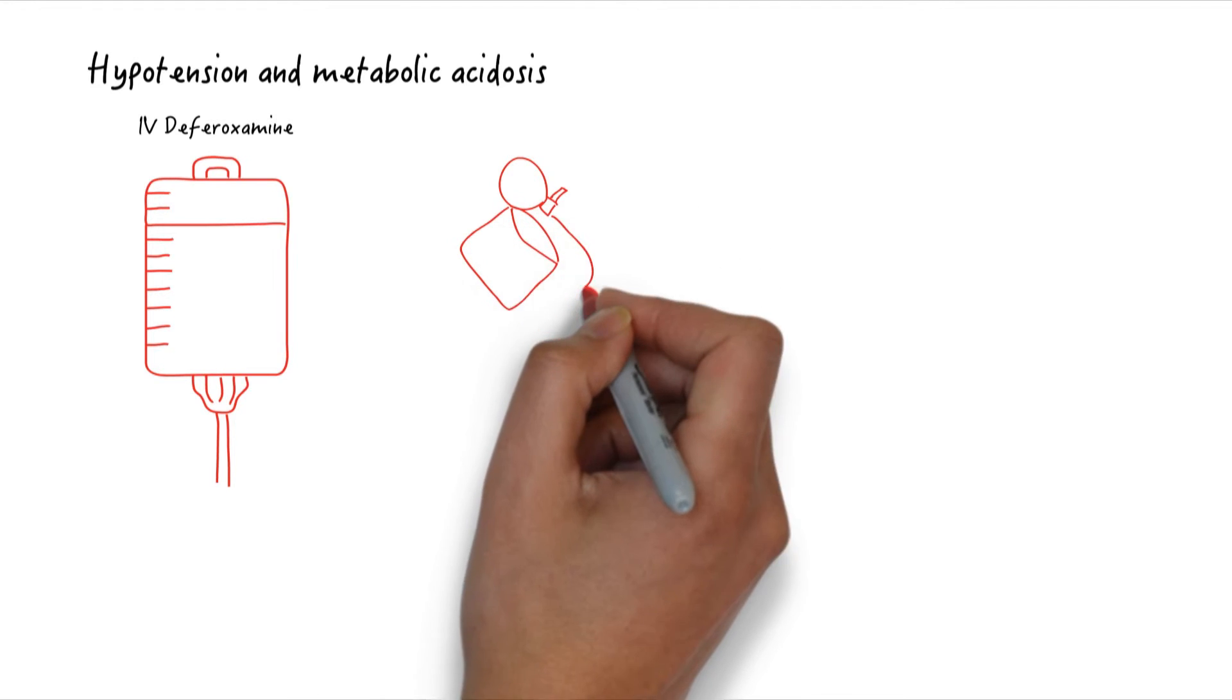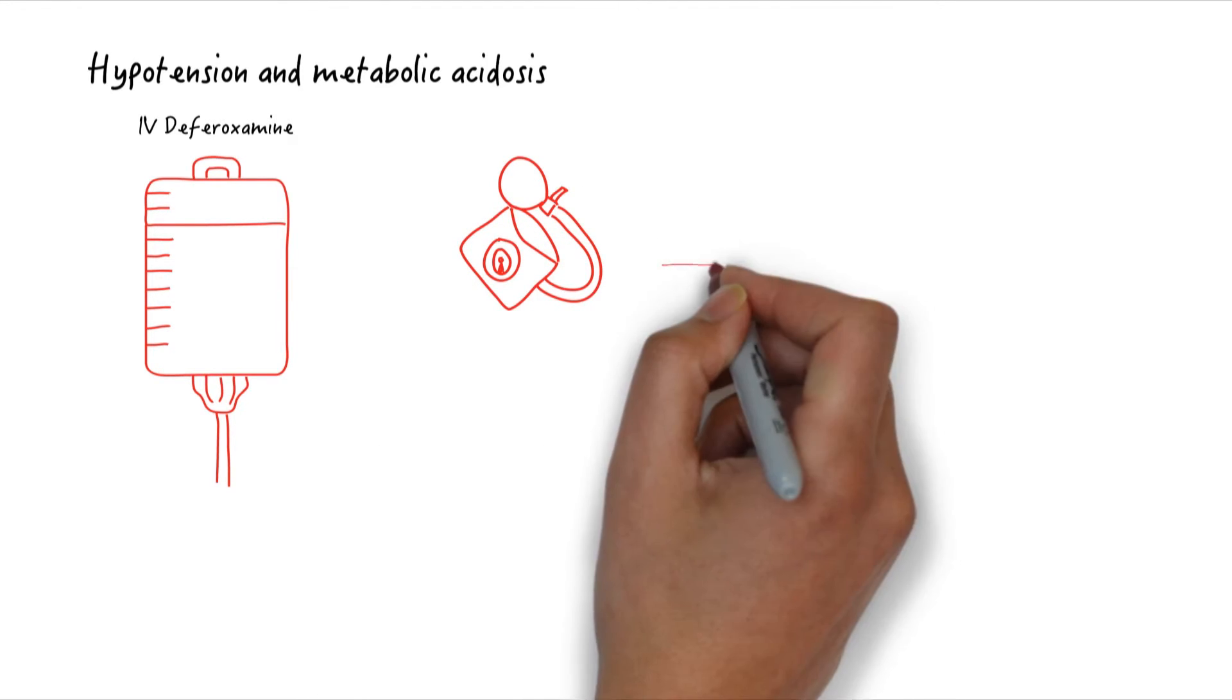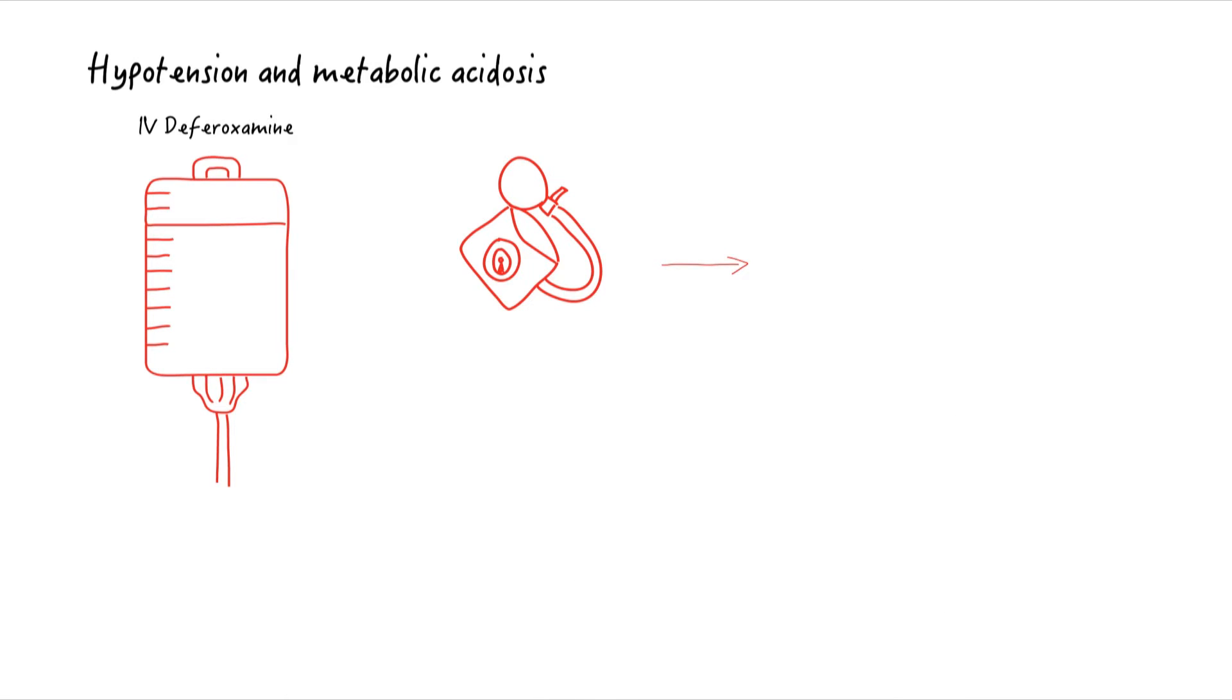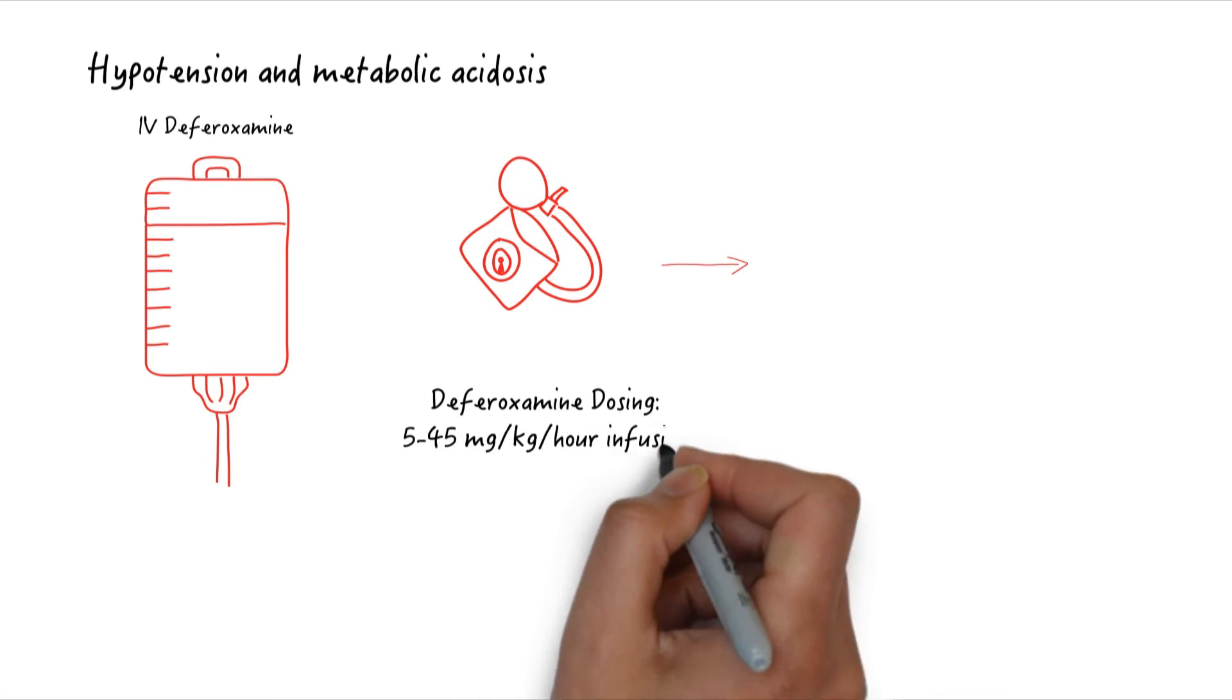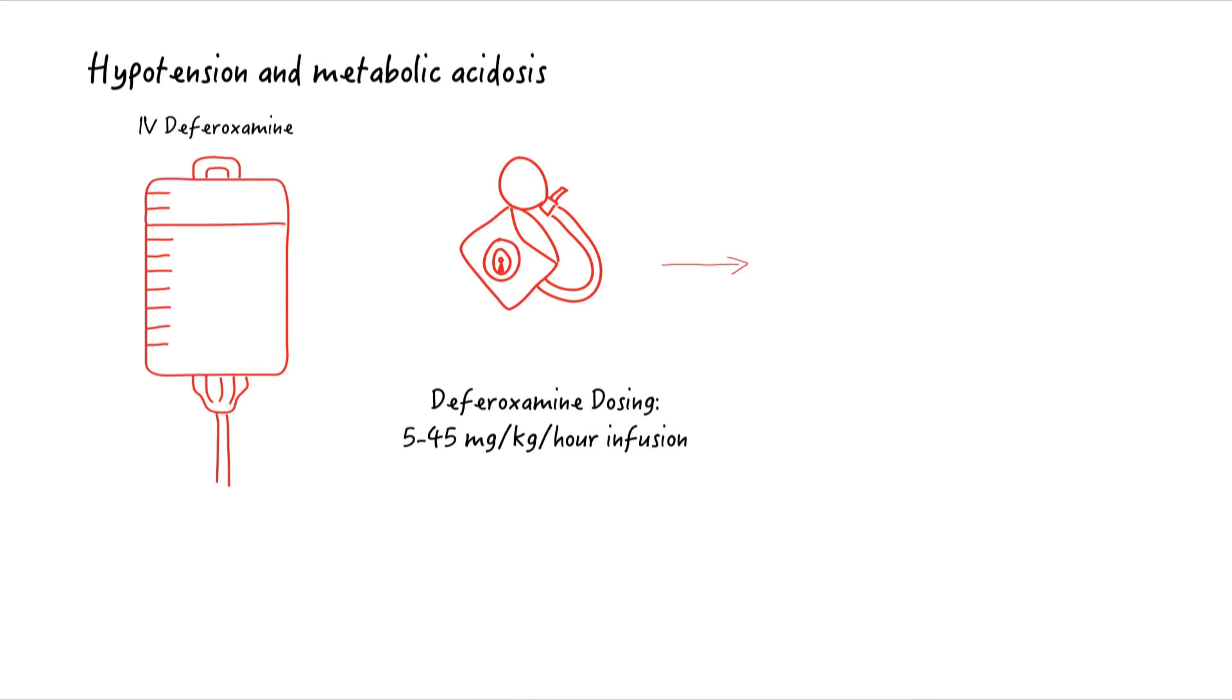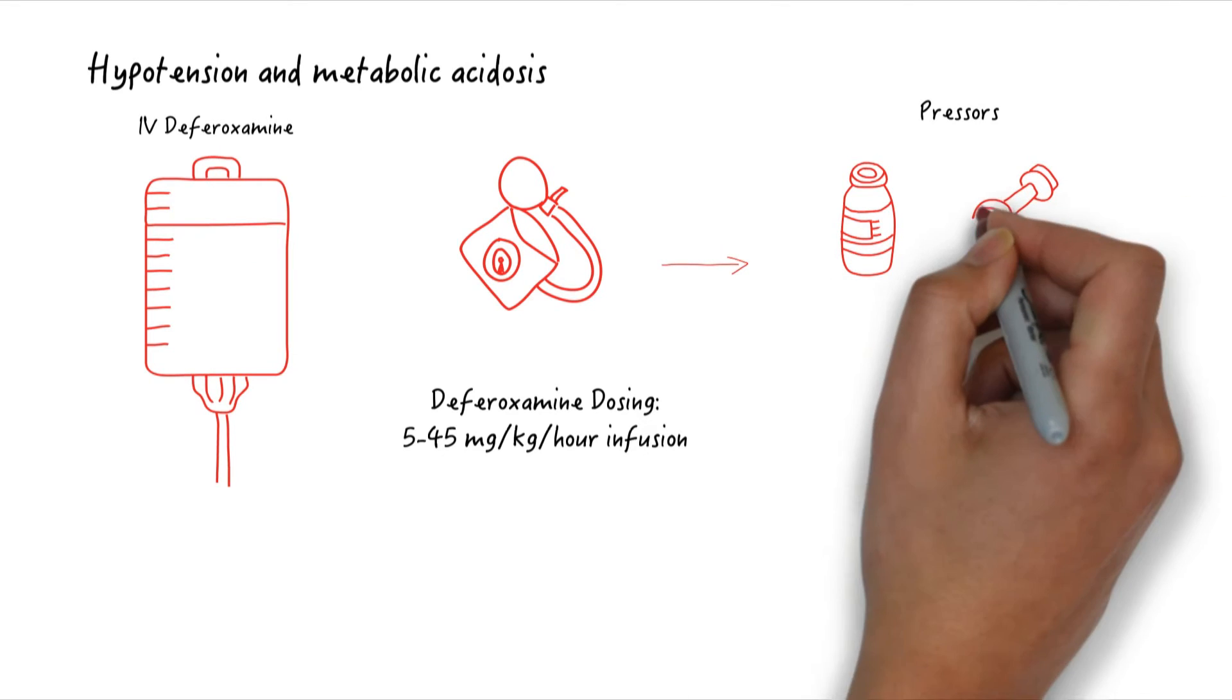IV deferoxamine can cause hypotension, so this infusion will be increased over time and titrated to the patient's blood pressure tolerance. Most start the infusion at 15 mg per kg per hour and titrate up to 45 mg per kg per hour in serious ingestions such as this one. The infusion may be slowed to 5 mg per kg per hour as needed. You might consider treating with norepinephrine if hypotension is not responsive to fluids or is worsening.